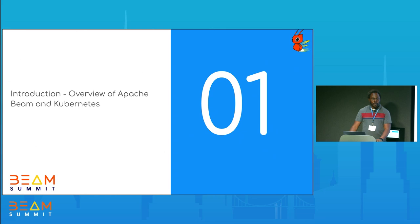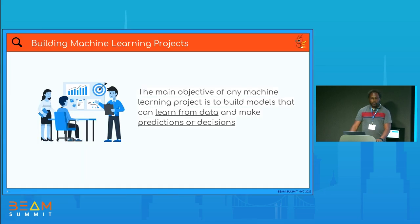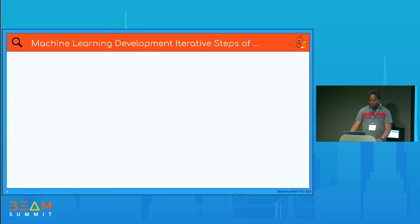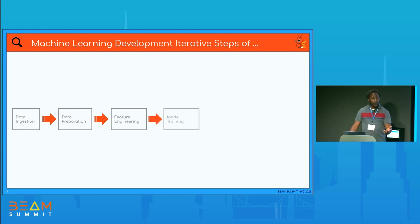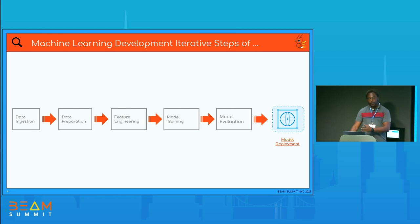A quick overview of Apache Beam and Kubernetes. The main objective of any ML project is to train a model, and from that model you want to quickly make inferences. A typical ML lifecycle looks like this: you ingest the data, do data prep and feature engineering to make sure you have the right features, then do model training, evaluate the model, and get your final model.